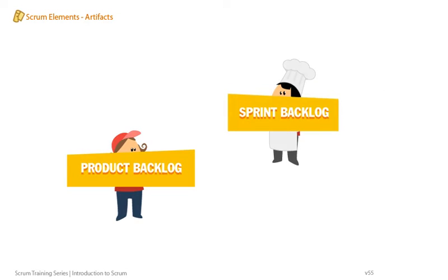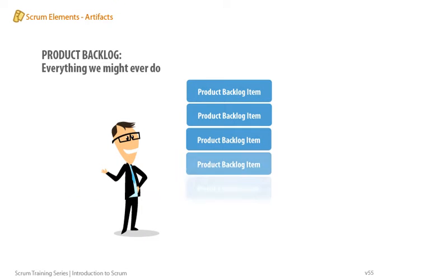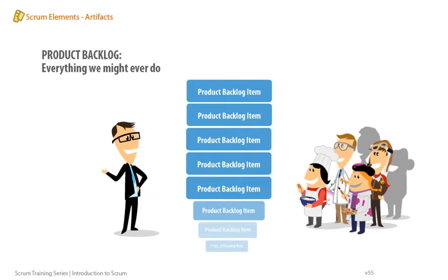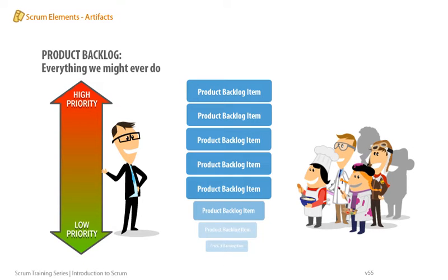Two important artifacts in Scrum are the Product Backlog and the Sprint Backlog. The Product Backlog is a one-dimensional, force-ranked list of customer-centric features prioritized by the Product Owner. It's a list of everything we might ever do — if it's not in the backlog, it doesn't exist. Anyone can add items to the Product Backlog, but the Product Owner prioritizes them and the Scrum Master makes it visible. A well-formed Product Backlog contains only well-formed Product Backlog Items, or PBIs, which might be written in user story form or as use case scenarios.